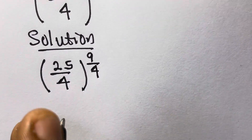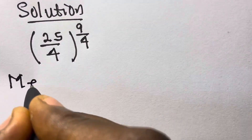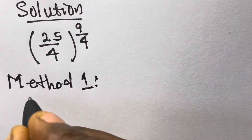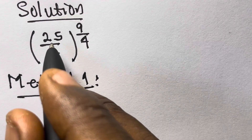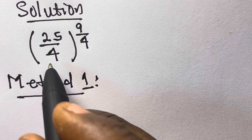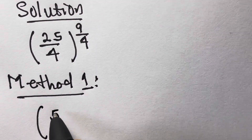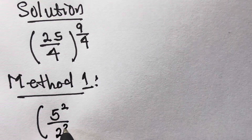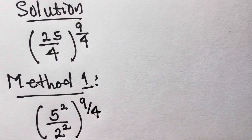Let's see Method 1. From here we can express 25 as 5 raised to the power 2, and 4 as 2 raised to the power 2. So we have 5 raised to the power 2 divided by 2 raised to the power 2, all raised to the power 9 divided by 4.